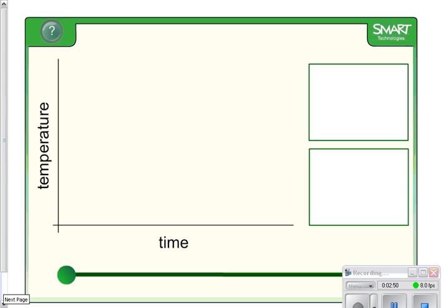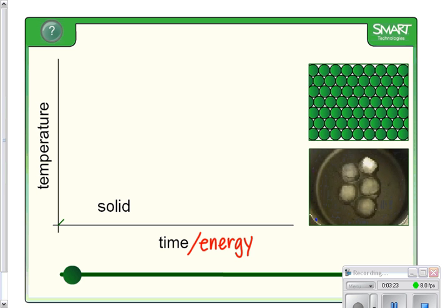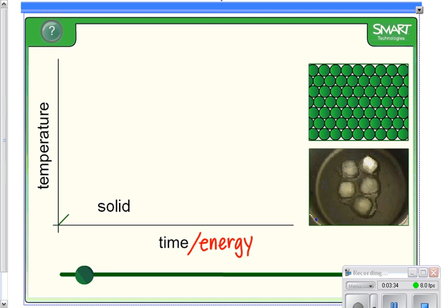When we start out with something as a solid and we add energy—this down here says time but it could also easily say energy or heat—we can graph what happens to the temperature as the energy is added. By sliding this green bar, this green dot across the bar, you're going to see what happens. I'm going to move it a little bit so you can see. Right now we have a solid phase. Over here in this beaker you can see that we have solid ice, and above it we have that cross-sectional area of the particles packed very close together. As we move this time or energy and increase the amount of time, you can see that the temperature goes up, which makes sense. As we add energy or heat, the temperature should go up.